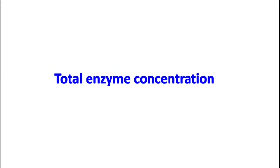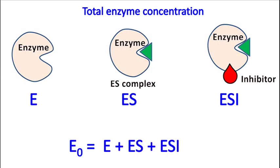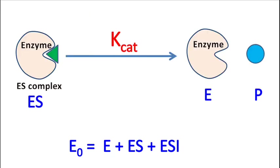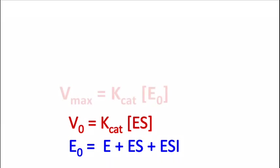The total enzyme concentration can be given as E0 is equal to E plus ES plus ESI. The velocity of the reaction can be given as V0 is equal to Kcat into ES. And the maximum velocity of the reaction can be given as Vmax is equal to Kcat into E0.